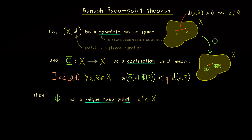Indeed the result here is that we find a unique fixed point we can call x*. The notion of a fixed point for a map is not complicated — it just means the map does not change this point. So if you put x* into phi you get out x* again. In the picture, this is a point that does not move when you apply phi. The theorem also tells us there is only one such point, so the Banach fixed point theorem gives us both uniqueness and existence.